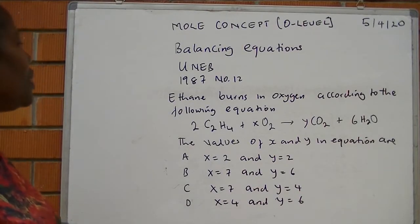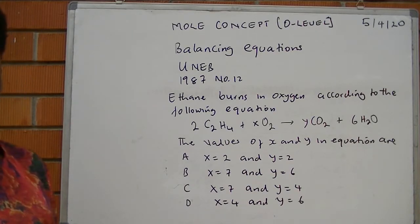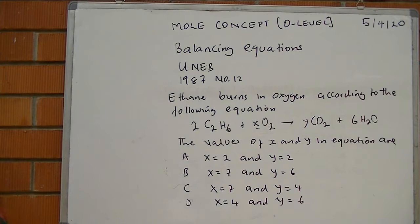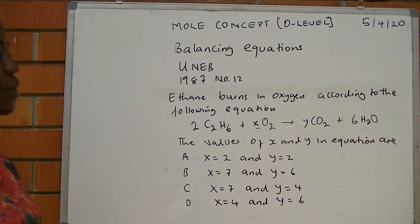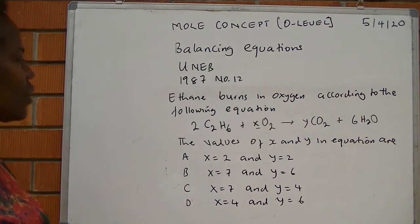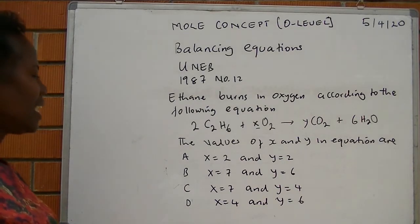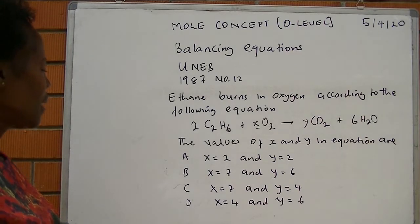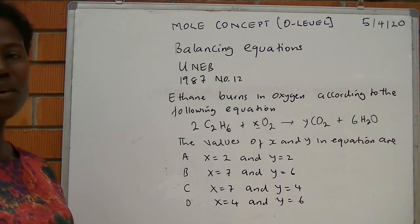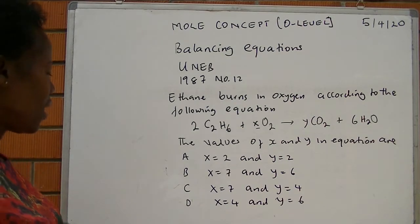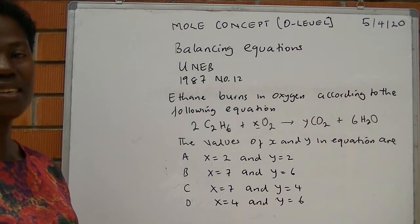Now let us look at an exam question. It appeared in 1987, number 12 of Paper 1. The question is: ethane burns in oxygen according to the following equation — 2 moles of ethane plus x moles of oxygen produce y moles of carbon dioxide and 6 moles of water. The options for x and y are: A) x=2, y=2; B) x=7, y=6; C) x=7, y=4; D) x=4, y=6.